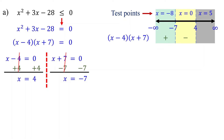For the third interval, substituting 5: 5 minus 4 results in a positive number, and 5 plus 7 also results in a positive number. The product of two positive numbers is positive. Therefore, the quadratic expression is positive in the third interval.